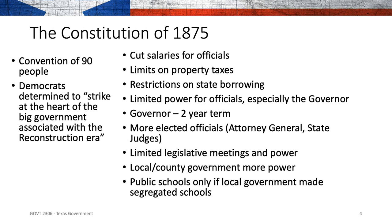The Constitution of 1875 established public schools only if local government ensured they were segregated. This is one of the less great parts of Texas history — it was written into the Constitution of 1875 that public schools could only exist if the government made sure they were segregated.